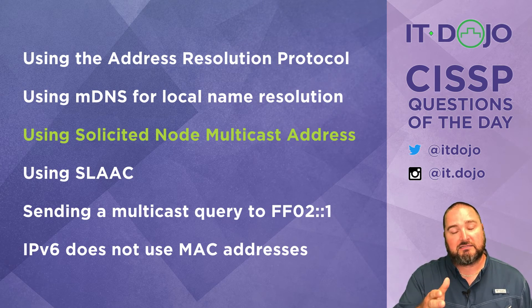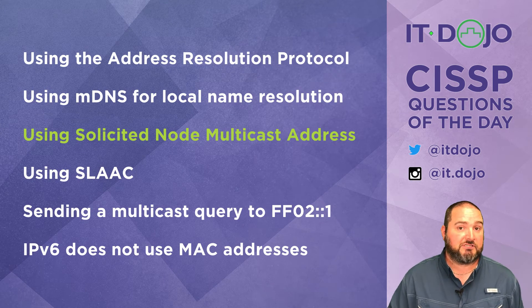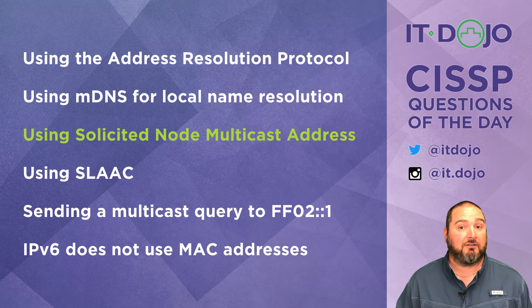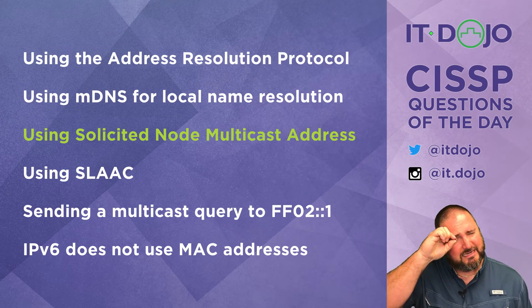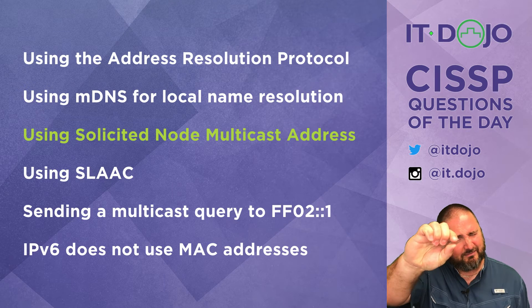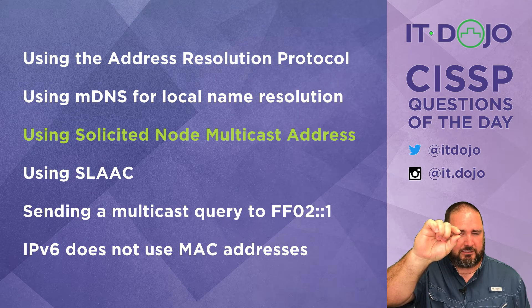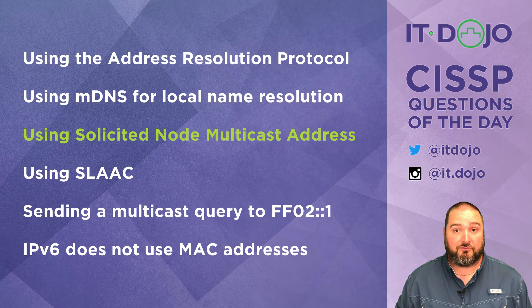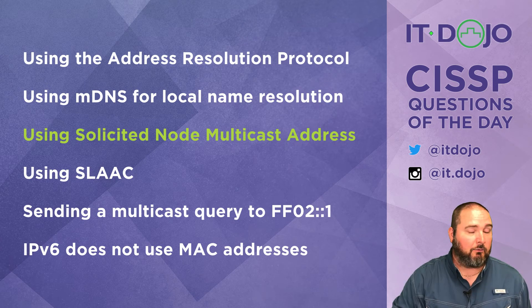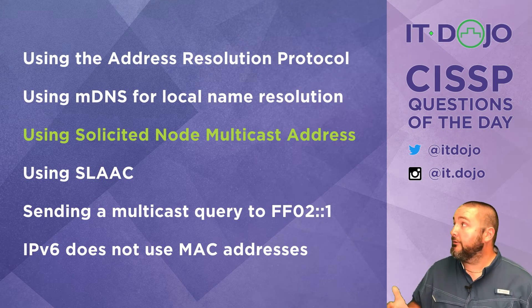Unlike ARP in IPv4, where you send a broadcast and everybody receives it, in IPv6 when you send a solicitation to learn a node's MAC address, there is a high degree of likelihood that only that node receives the solicitation — making your network more efficient and more secure. It is definitely much more efficient, and there are more benefits we'll cover another day.